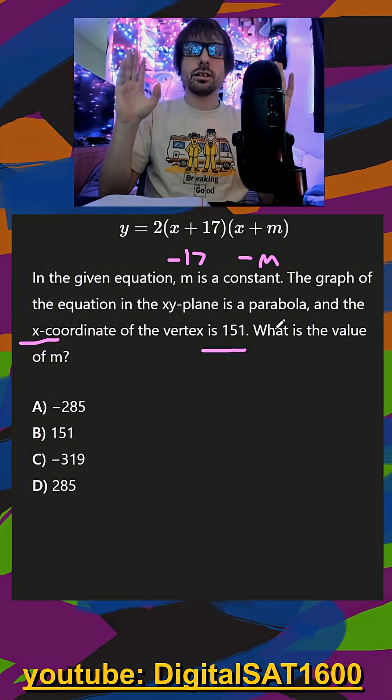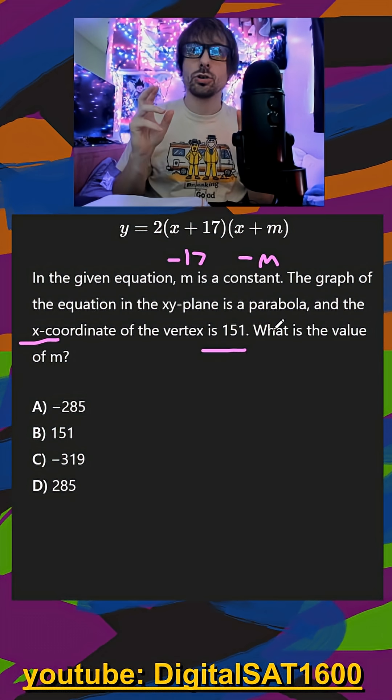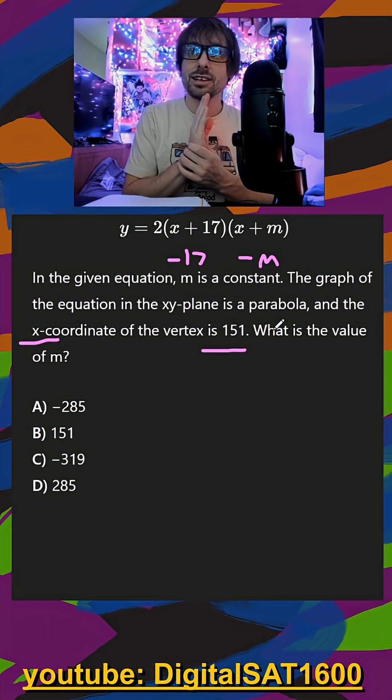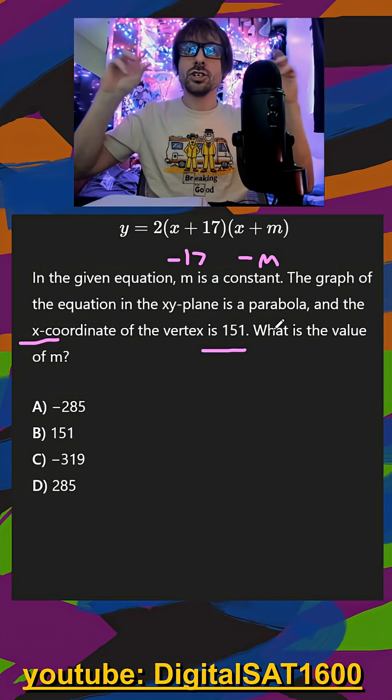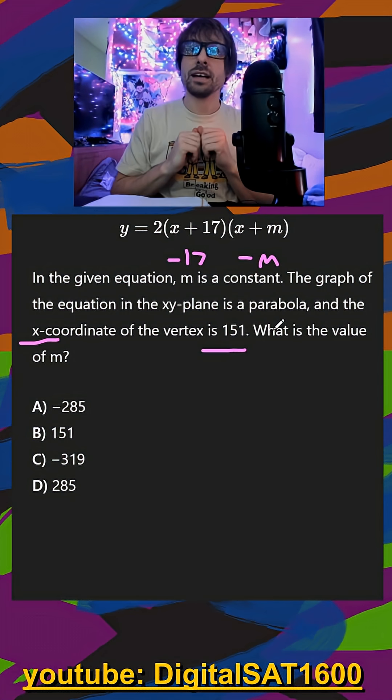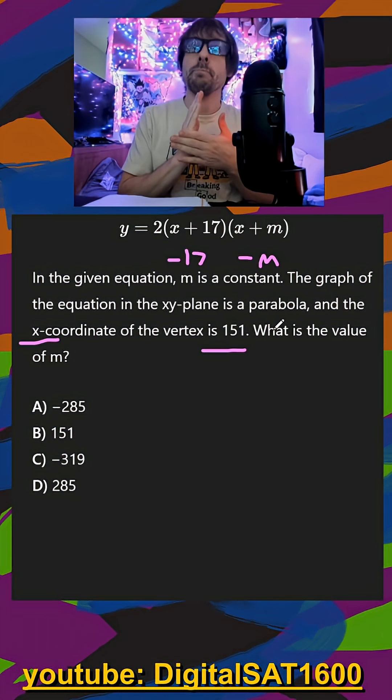Remember that your two x-intercepts are going to be symmetrical around your vertex. Therefore, if I add my two x-intercepts together and divide by two, that should get me my middle, my vertex.